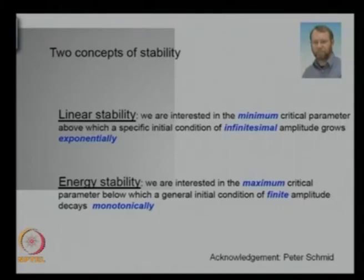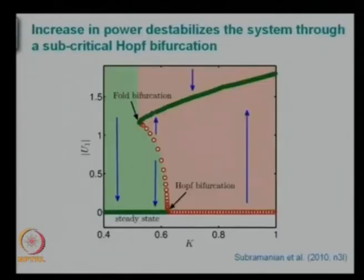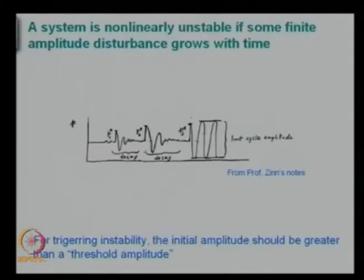This slide I took from my friend and colleague Peter Schmidt from Ecole Polytechnic. He says there is something called linear stability. We are interested in the minimum critical parameter above which a specific initial condition of infinitesimal amplitude grows exponentially. Then there is something called energy stability. We are interested in the maximum critical parameter below which a general initial condition of finite amplitude decays monotonically. If you go by the definition, above this any parameter will go up and to the left of this anything will die. So that is the energy stability and this is the linear stability.